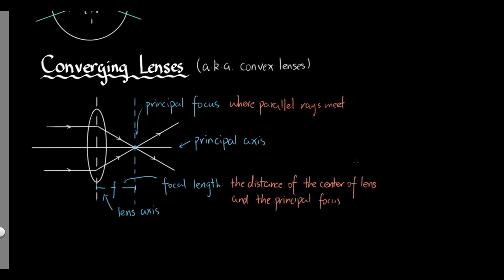I'm writing these two definitions down because they are in the syllabus, so you need to use the terms principal focus and focal length. Where parallel rays meet is the principal focus, and the distance from the center of the lens to the principal focus is the focal length. So the key terms we need to know are: principal focus, principal axis, focal length, and lens axis.